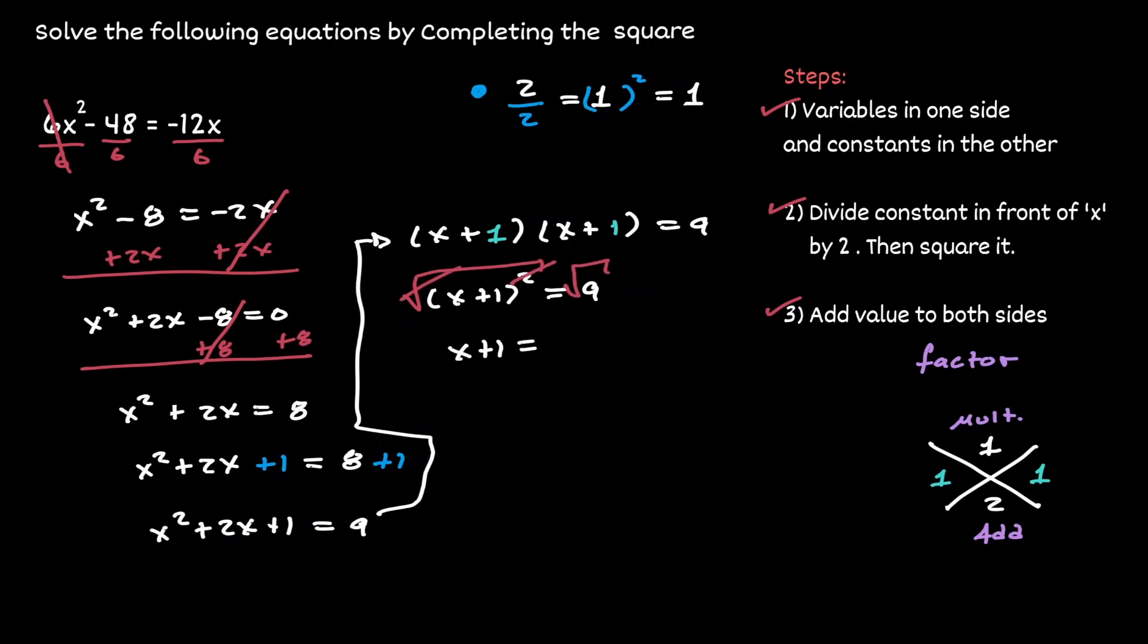And on the right hand side, the square root of 9 is 3, but because we took the square root, we need to consider the plus and the minus. And now we need to consider two equations. The first equation, when we consider the positive side of the plus and minus. And the second equation, when we consider the negative side of the plus and minus.